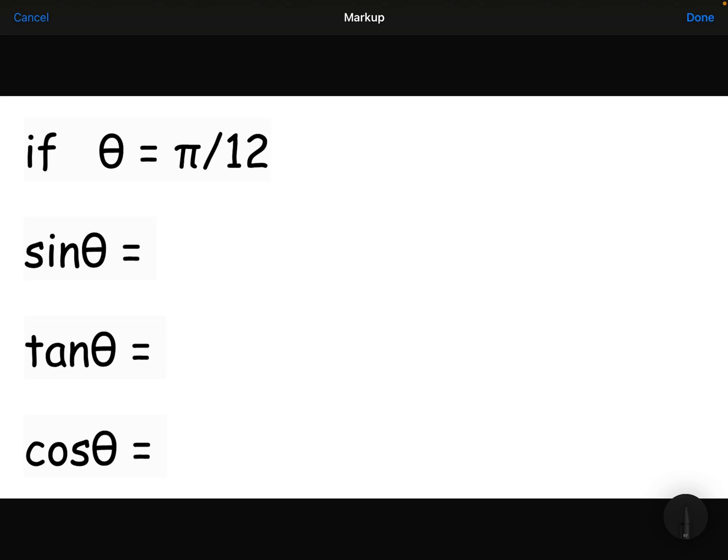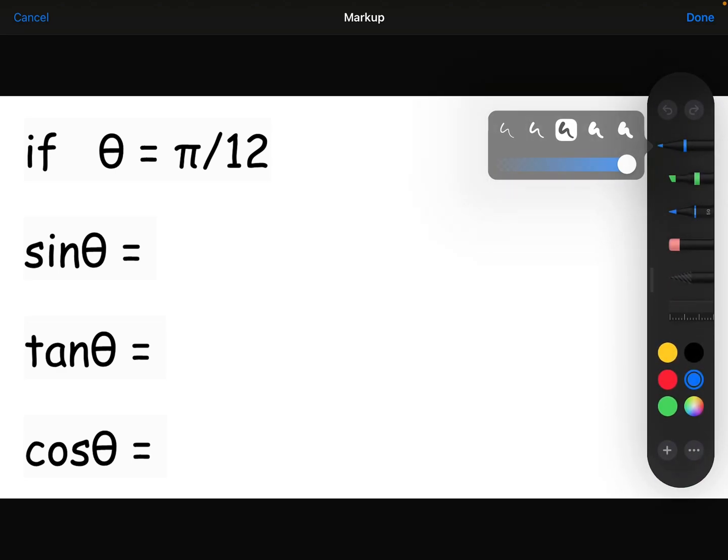So here I have an angle, an angle θ, which is π over 12. π over 12, if you type that into your calculator, is roughly about 0.262.